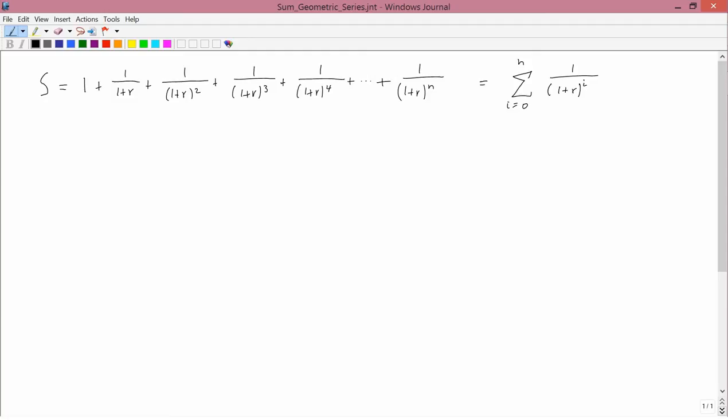It's 1 plus 1 over 1 plus R, plus 1 over 1 plus R squared, plus 1 over 1 plus R cubed, plus 1 over 1 plus R to the fourth, dot dot dot, 1 over 1 plus R to the N. If you're familiar with summation notation, it can be written as the sum as I goes from 0 to N of 1 over 1 plus R to the I. This kind of expression occurs fairly often when working with present value, so we need to know how to handle it.